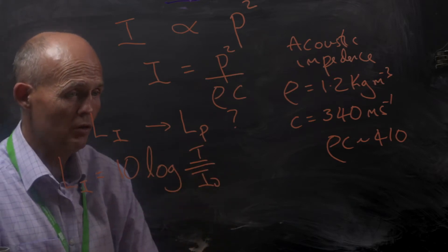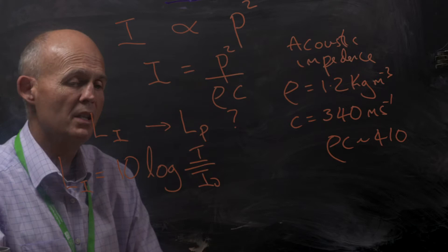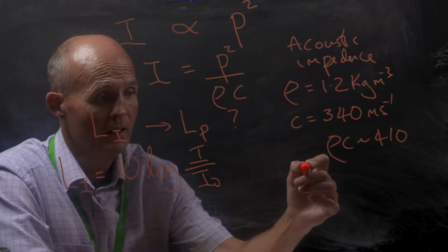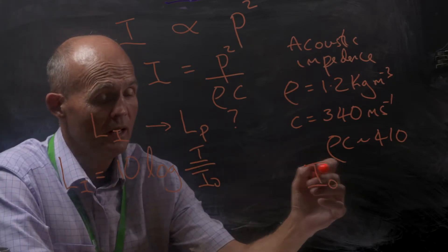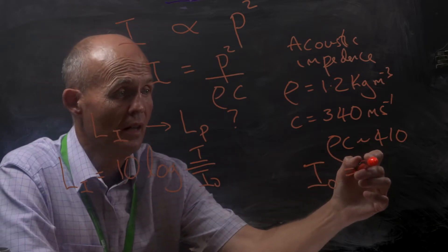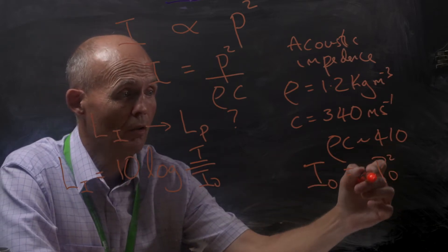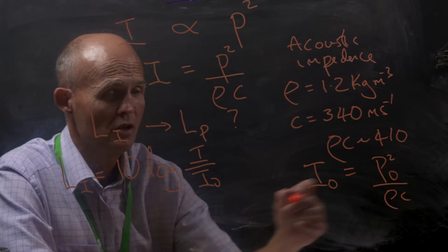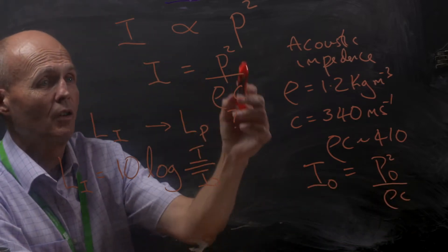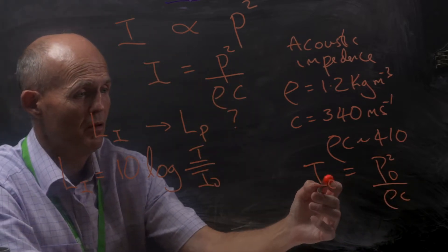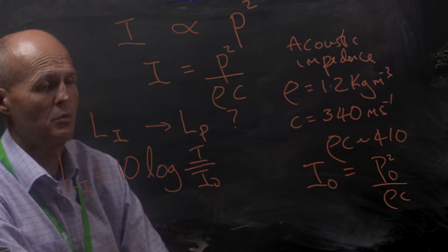Also for I naught, I naught, as remember, is this reference value for intensity, and we can also write this as P naught squared over rho c. So using the same arguments that we've got here, we've just substituted the reference intensity with the reference pressure there as well.